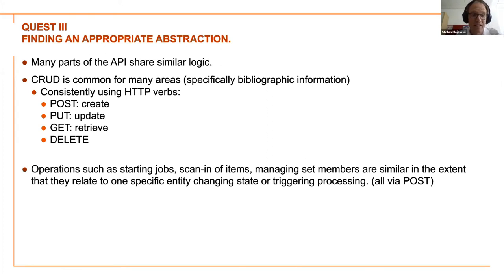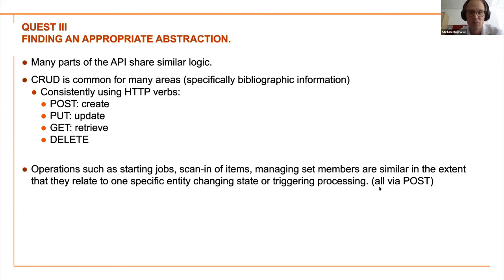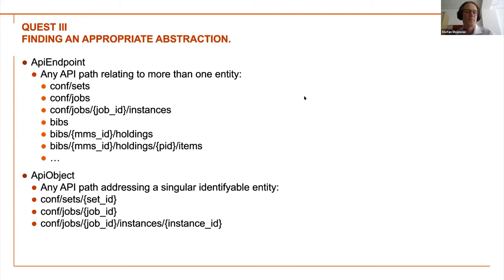Many parts of the API share similar logic — CRUD (create, retrieve, update, delete) is common for many areas, specifically bibliographic information. It's consistently using the HTTP verbs: POST, PUT, DELETE, GET for the related actions create, update, and retrieve, usually also labeled that way in the documentation. Operations such as starting jobs, managing set members are also similar — all done by a POST.